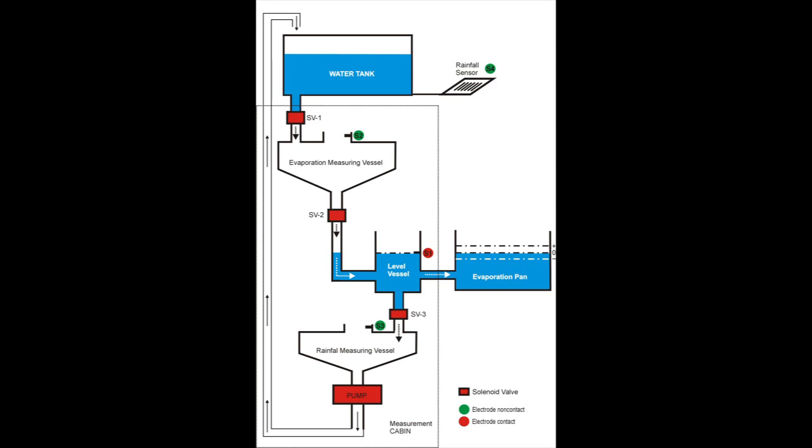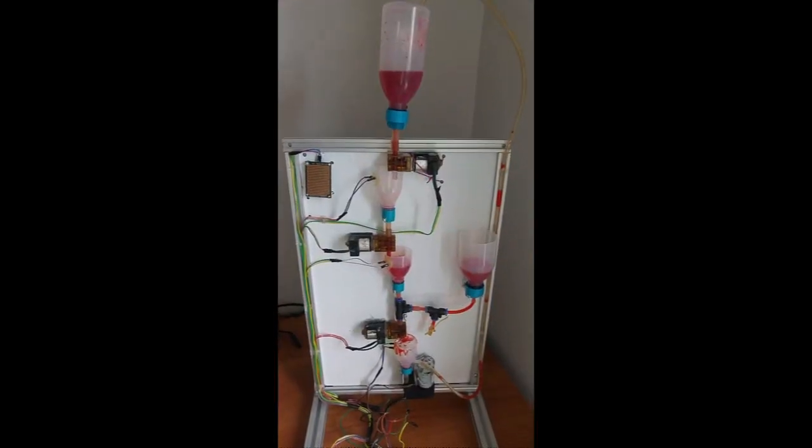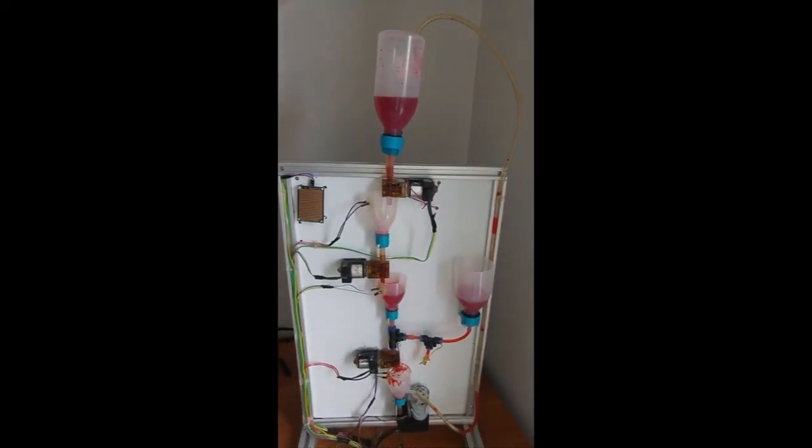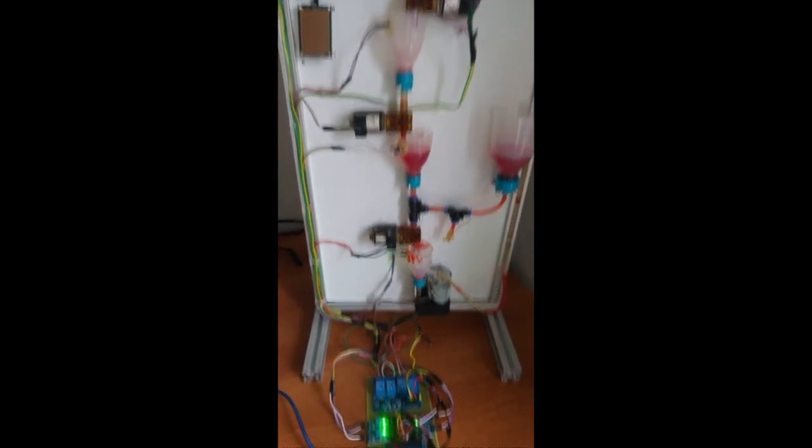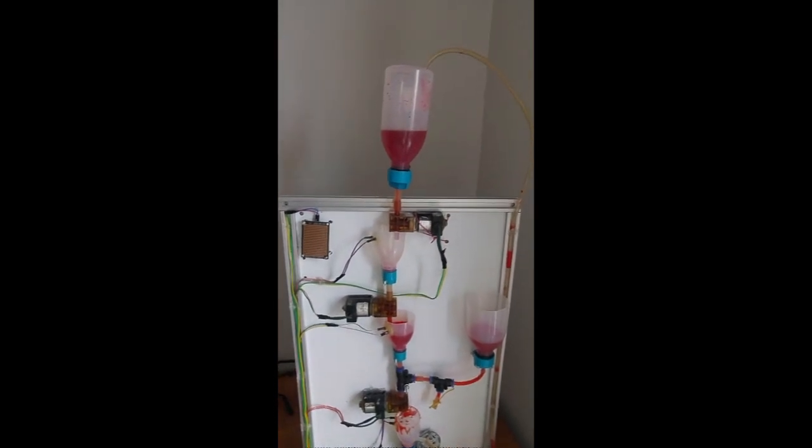We also have liquid detection electrodes - there are three of them. S1 is level measuring electrode, S2 is evaporation measuring cup electrode, and S3 is rainfall measuring electrode. We also have one more for detecting precipitation, called S4 rainfall start detection electrode. We have three solenoid valves actuators - SV1, SV2, and SV3 - that control the flow of liquid in the system. There's also a pump that discharges the water accumulated in the evaporation pan from the rainfall measuring vessel into the water tank.